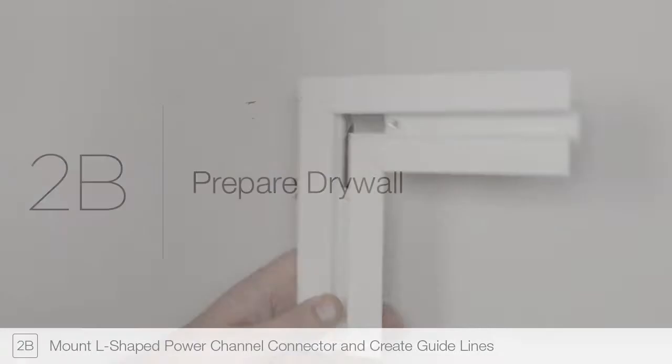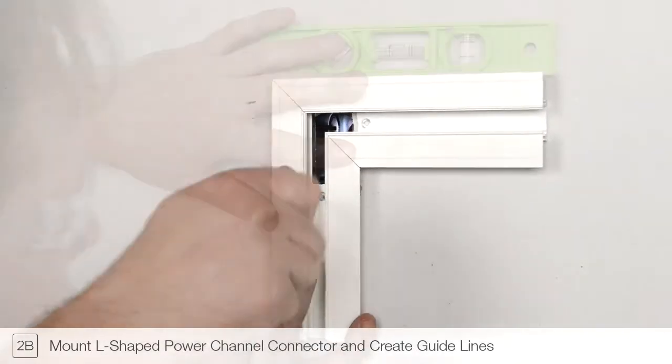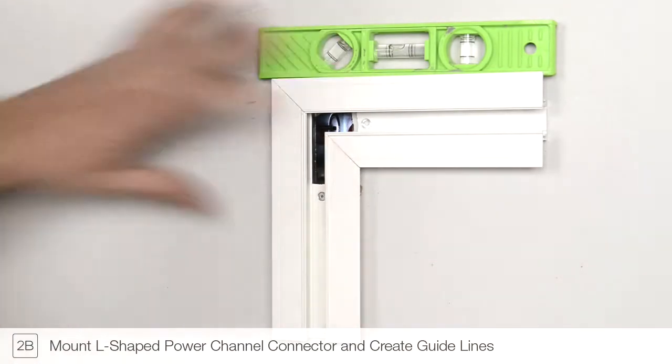Step 2B. Mount the L-shaped power connector to the junction box. Ensure the power connector is level before marking.